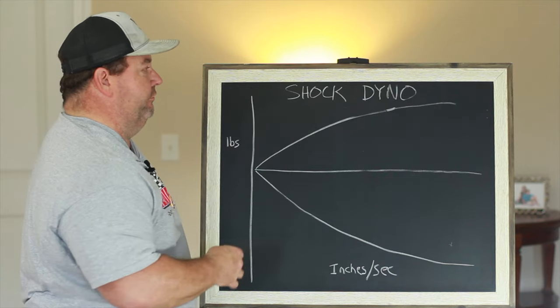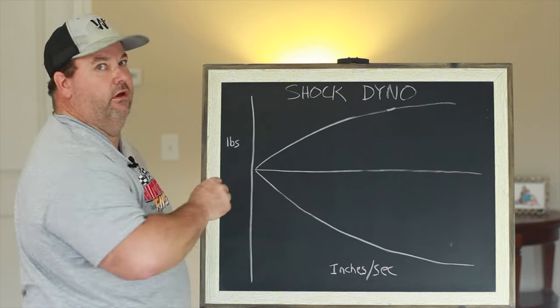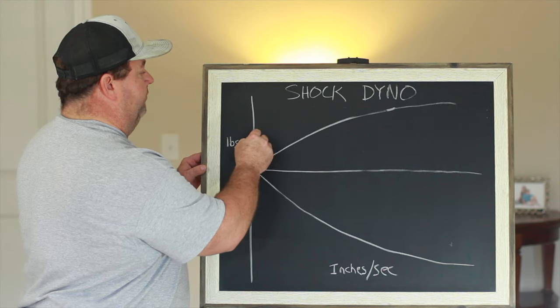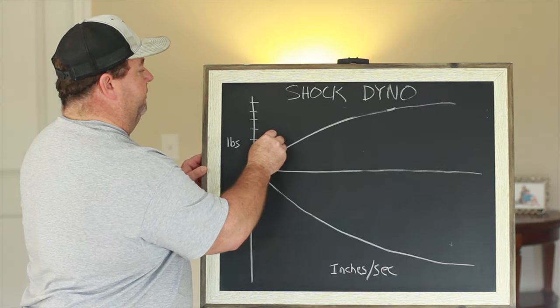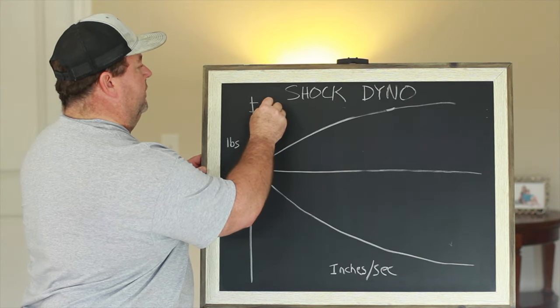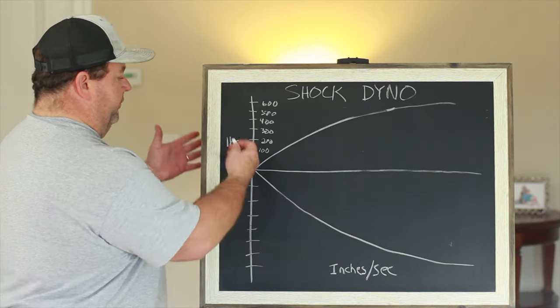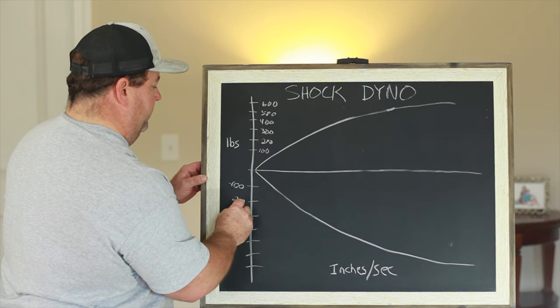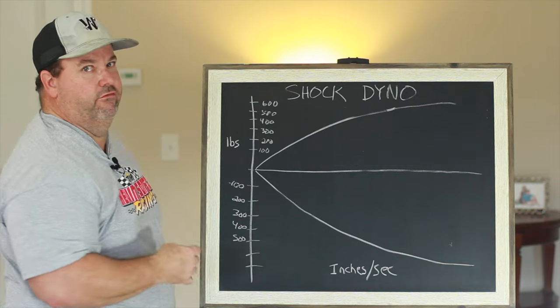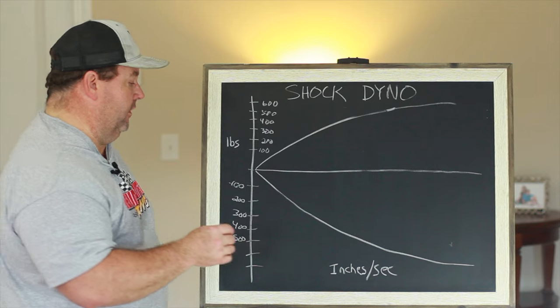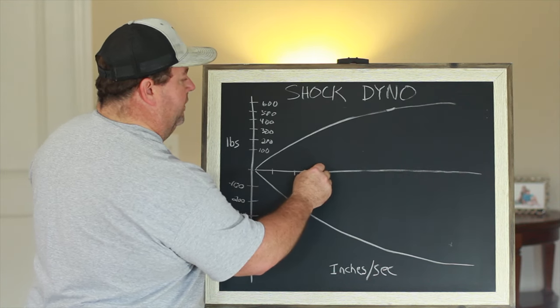Here's a very rudimentary drawing of a shock dyno graph. Along the Y axis is pounds of force. It's very important that there are graduated marks through here, like 100, 200. Along the negative side of the axis you have the same type thing. This is your Y axis, pounds of force.